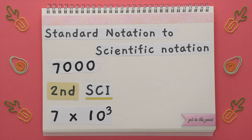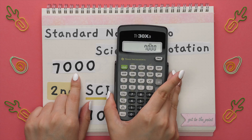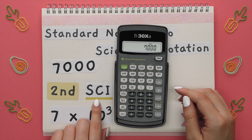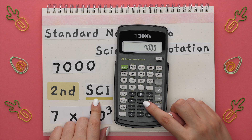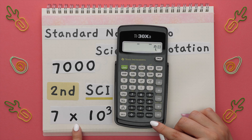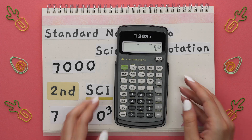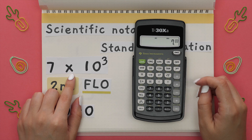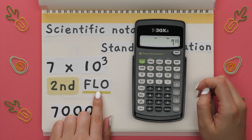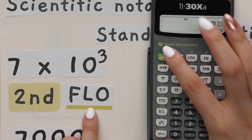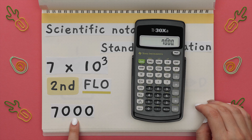Here's how to switch back and forth from standard notation to scientific notation and vice versa. If we entered a number in our calculator and wanted to switch it to scientific notation, locate where SCI is — it's on the 5 — so press Second, then press the 5 button. To change a number from scientific notation back to standard notation, locate where FLO is — it's on the 4 — then press Second and the 4 button.